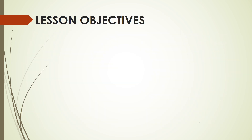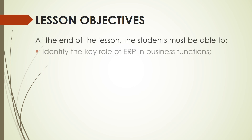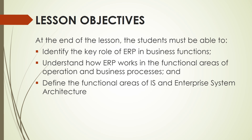For this lesson, here are our objectives. At the end of the lesson, we must be able to identify the key role of ERP in business functions, understand how ERP works in the functional areas of operation and business processes, and define the functional areas of IS and enterprise system architecture.